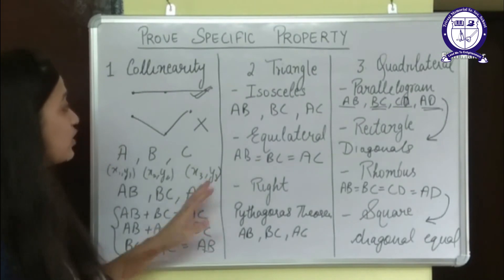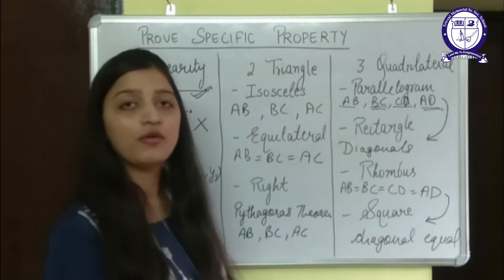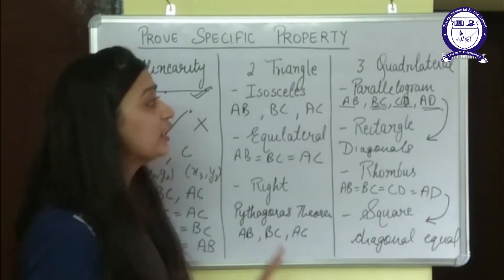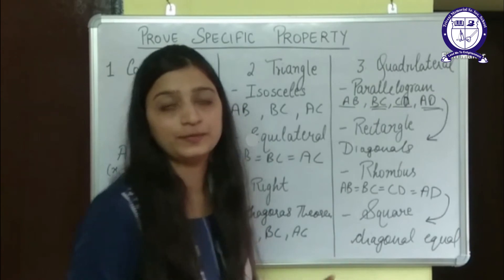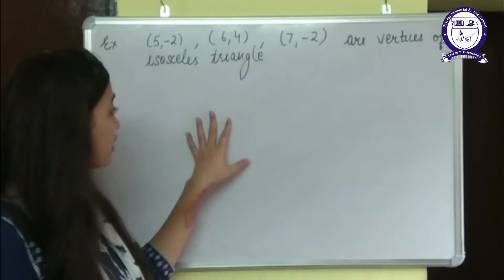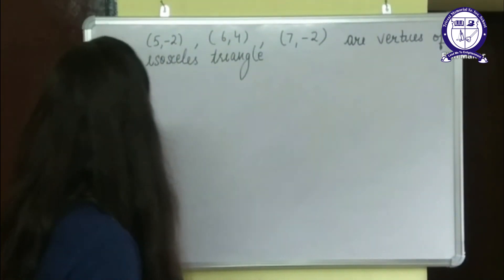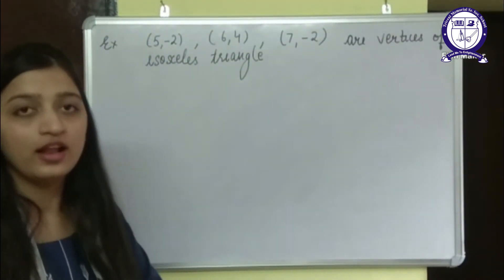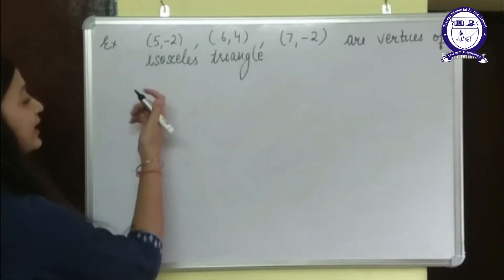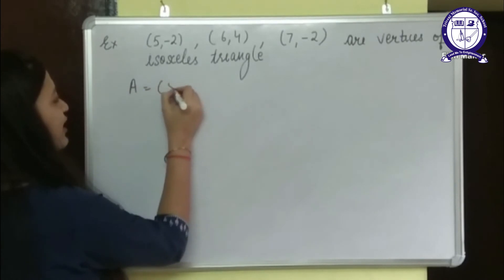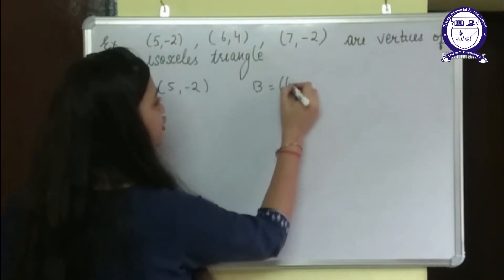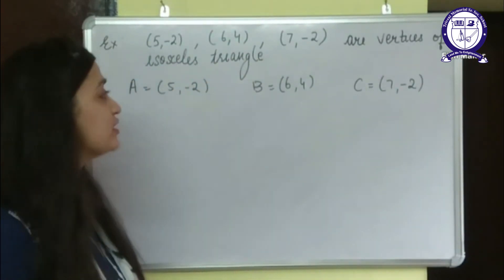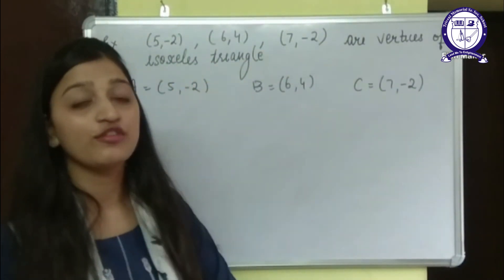So these are the questions which can be asked based on the distance formula — show collinearity, or that points form a particular type of triangle or quadrilateral. We are going to do a question based on the property we have learned: we need to find that three given points are the vertices of an isosceles triangle. The three points are A(5, -2), B(6, 4) and C(7, -2).